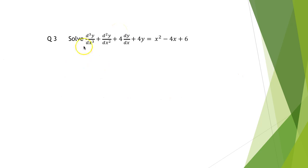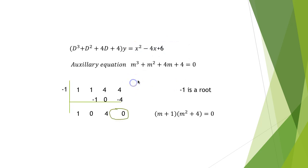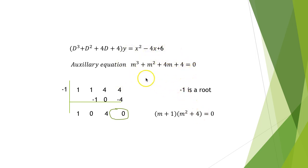Next problem: solve d³y/dx³ + d²y/dx² + 4·dy/dx + 4y = x² − 4x + 6. We write this as (D³ + D² + 4D + 4)y = x² − 4x + 6. The auxiliary equation is m³ + m² + 4m + 4 = 0. By inspection, m = −1 is a root since substituting gives 0.